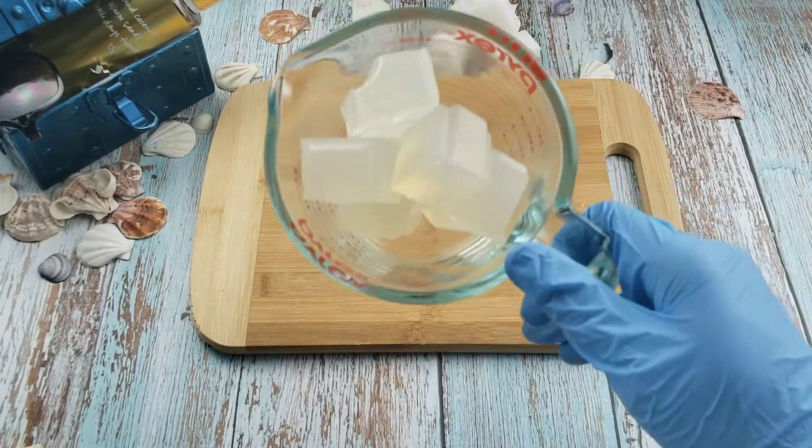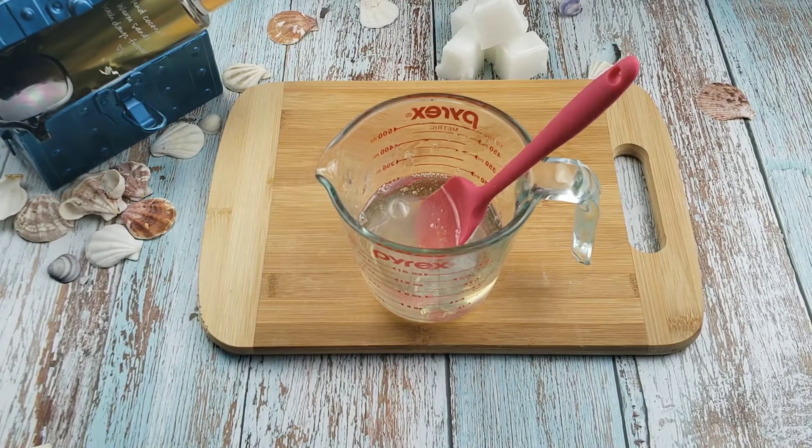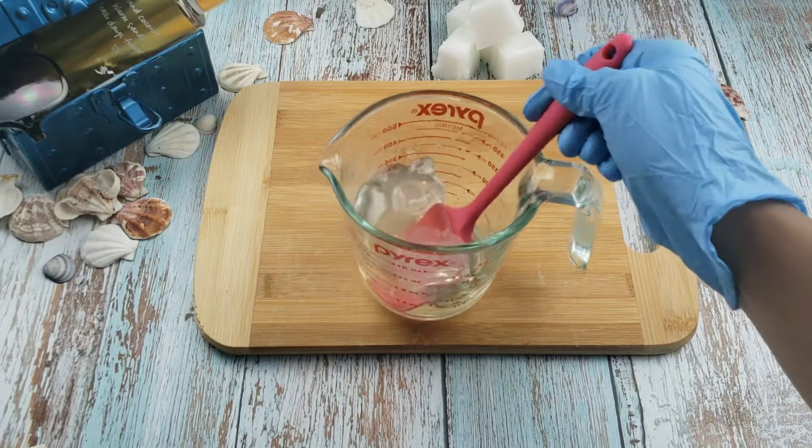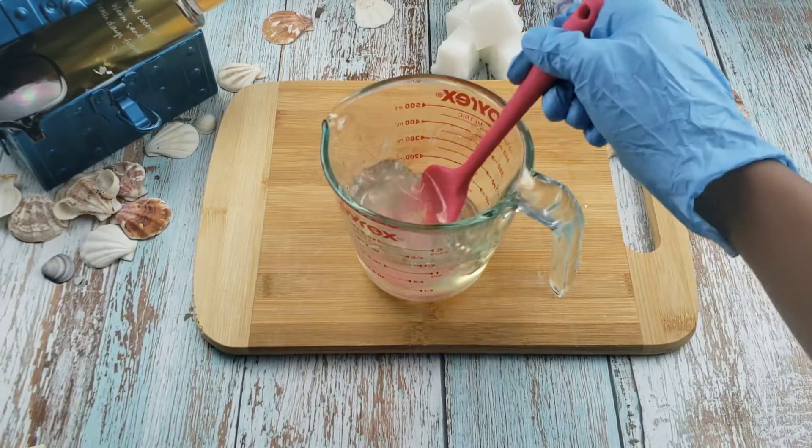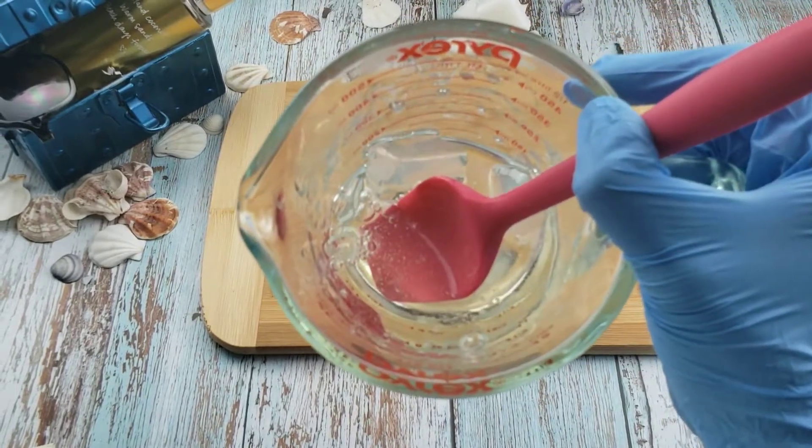Like before, I cut it into cubes, placed it in a glass measuring cup and put it in the microwave, this time for 30 seconds initially. This is what it looks like after 30 seconds. Then I placed it back into the microwave for 25 seconds to get it fully melted.